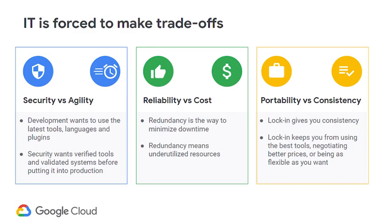The second trade-off is reliability versus cost. On-premises, if you want to bring in redundancy, you may have to duplicate resources, which can result in a large amount of resources being underutilized. When moving to the cloud, organizations want to make sure this is addressed — if they require scale, will they get it? They want to understand that they'll be charged additionally for scale but need that assurance.